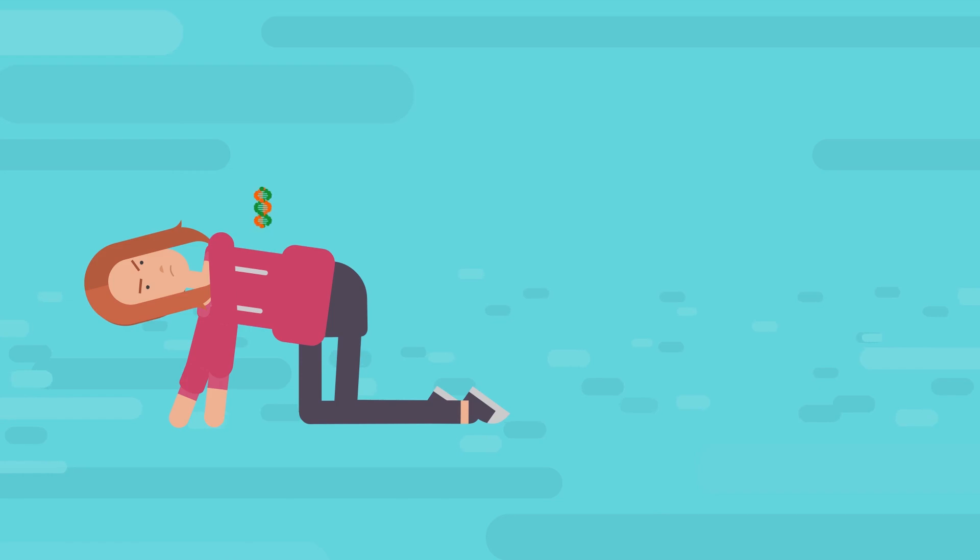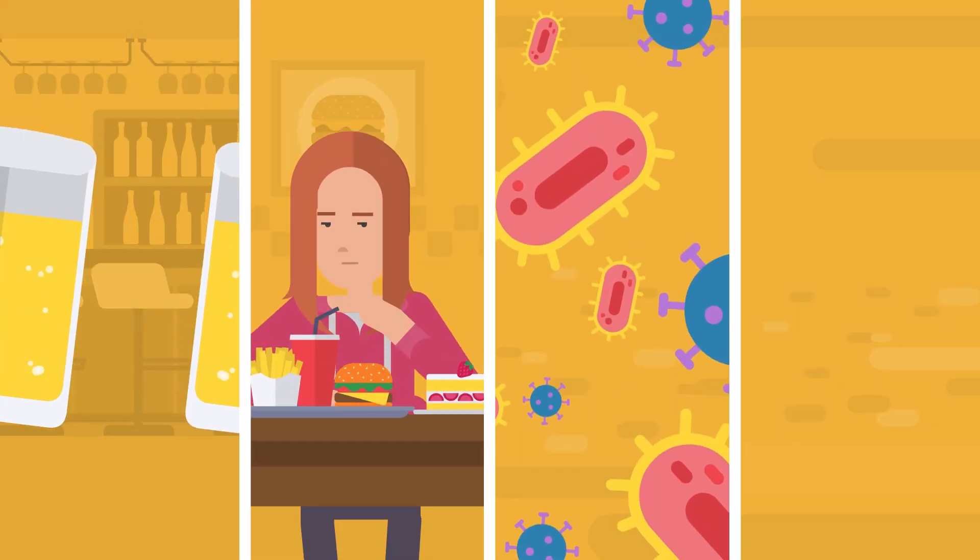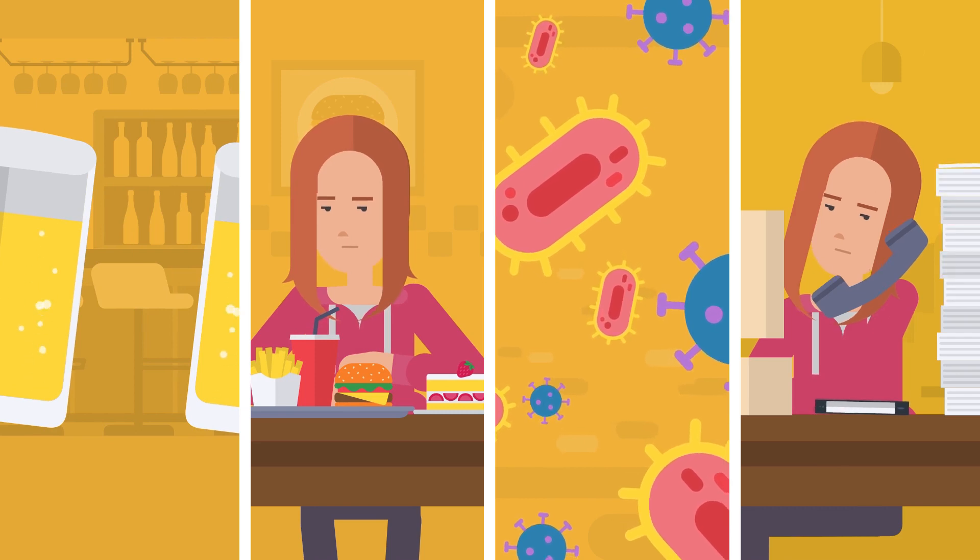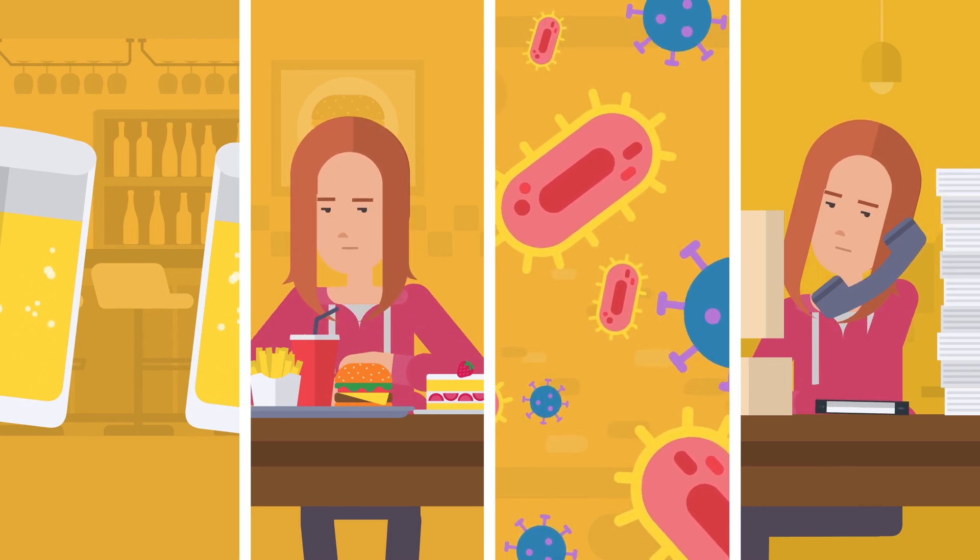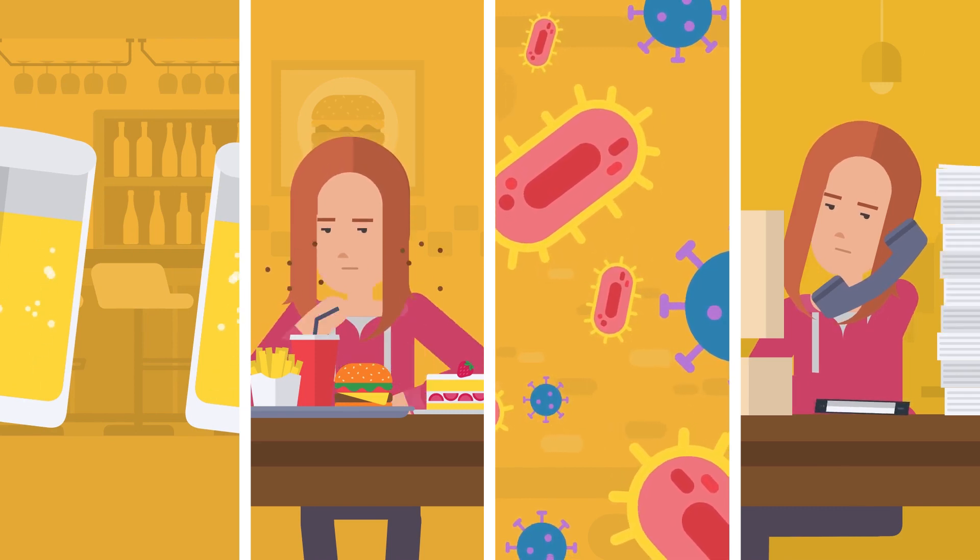Irritable bowel syndrome has a genetic element. Lifestyle, eating habits, infections and stress play a role too though. They can cause the disease to break out, or make an existing condition worse.